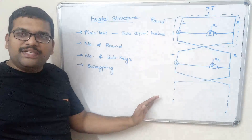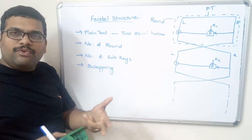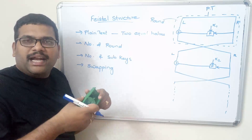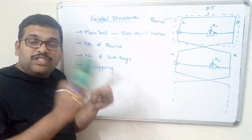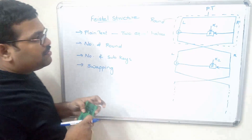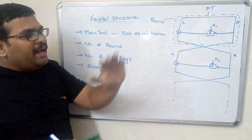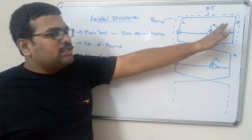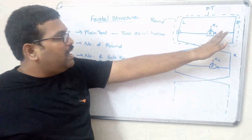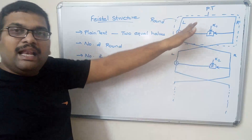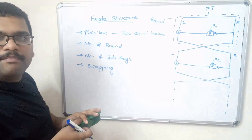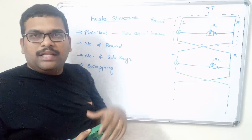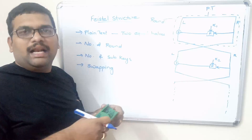This is all about the Feistel structure. In the next classes we are going to see the block cipher algorithm called DES — Data Encryption Standard — which follows the Feistel structure. In that algorithm the plaintext is also processed in two equal halves; the right half is applied to a function using a sub-key; the result is XORed with the left half; swapping is done; and this process is repeated in a number of rounds depending on the algorithm.